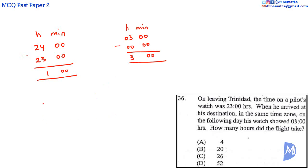So the total flight time is 1 hour added to 3 hours, which is equal to 4 hours. The answer is A.